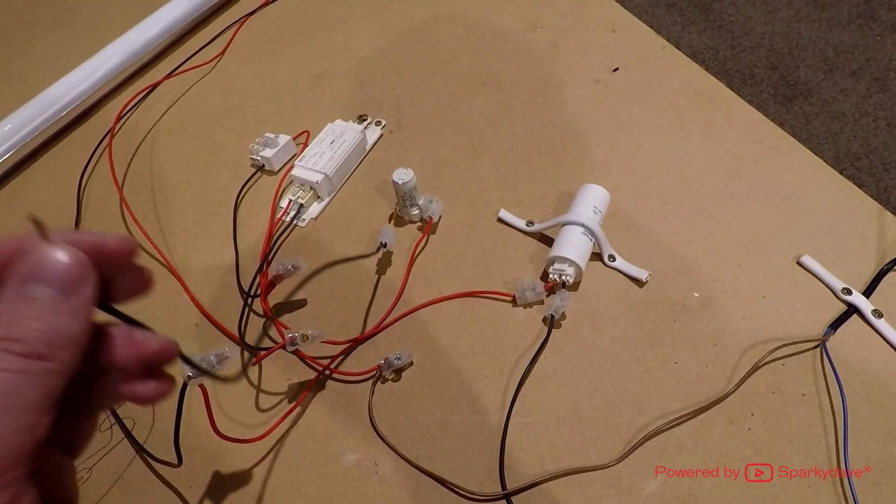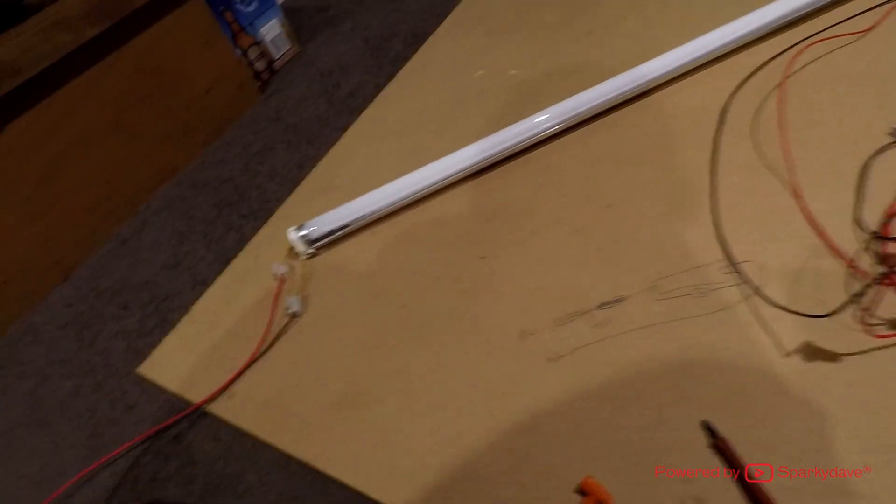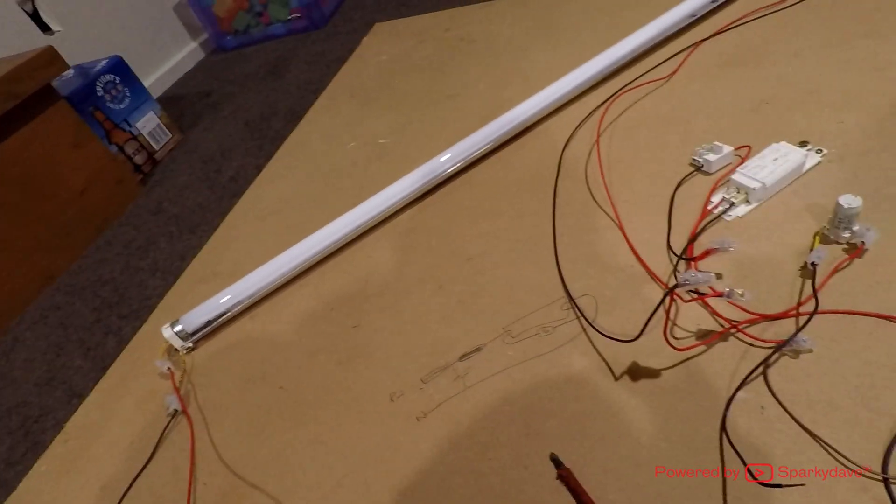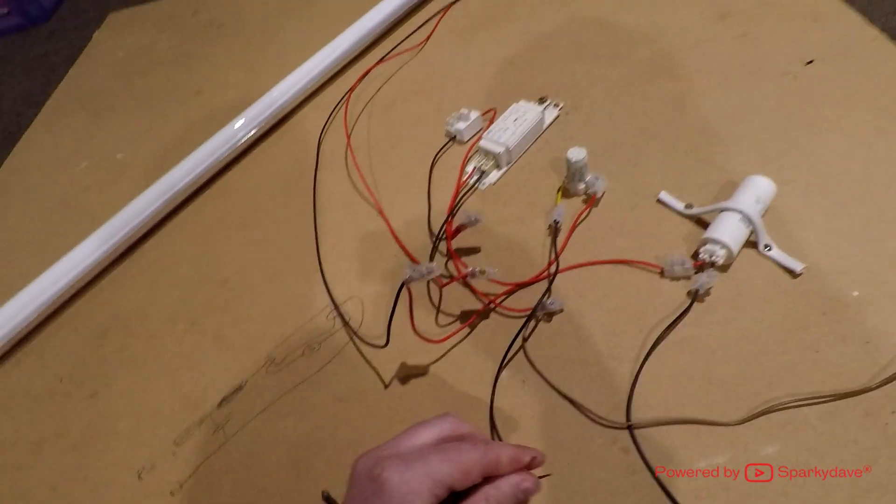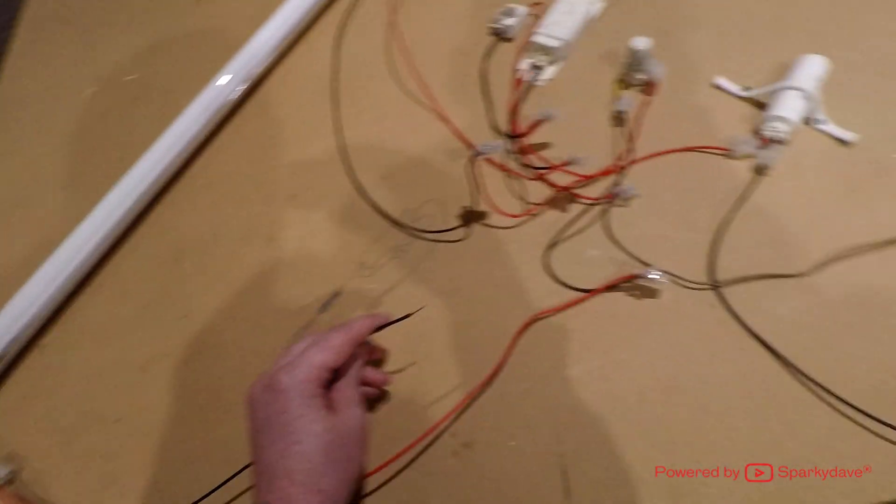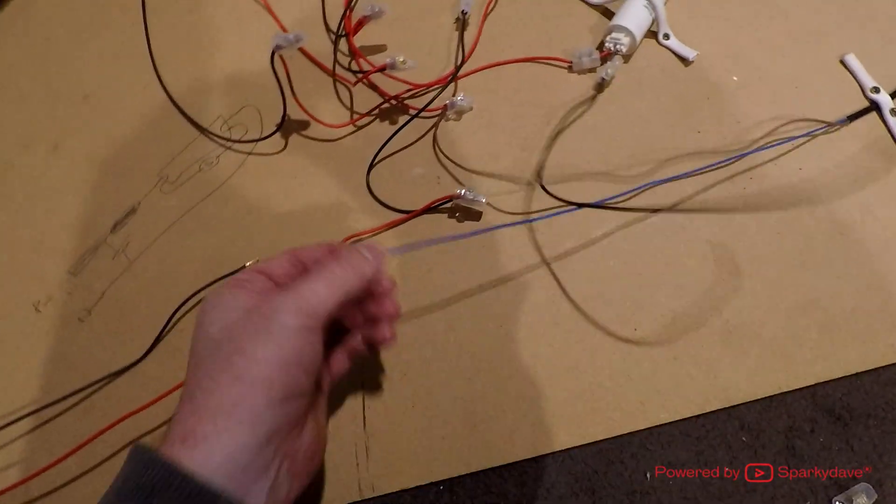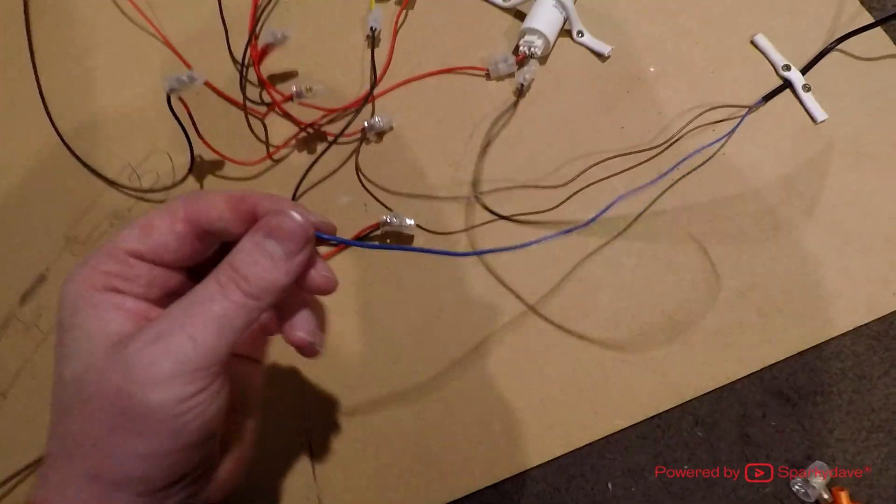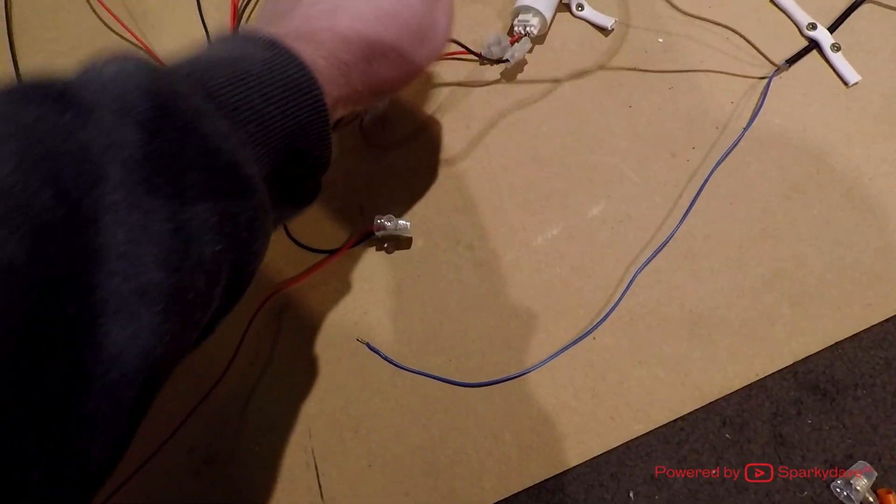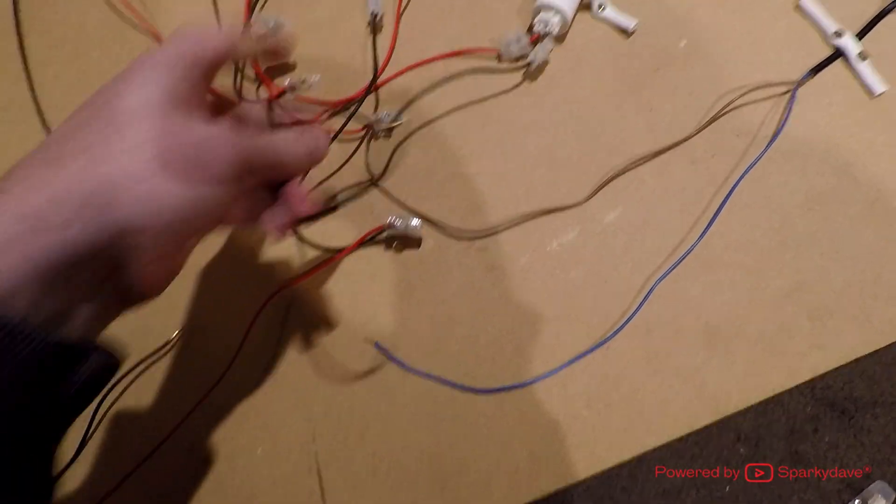From the black side of the starter I'm going to connect that to the opposite side red of the light fitting itself, and then the black side of the light fitting from that same end I'm going to tie in with the blue neutral cable and also the black tail from the capacitor.